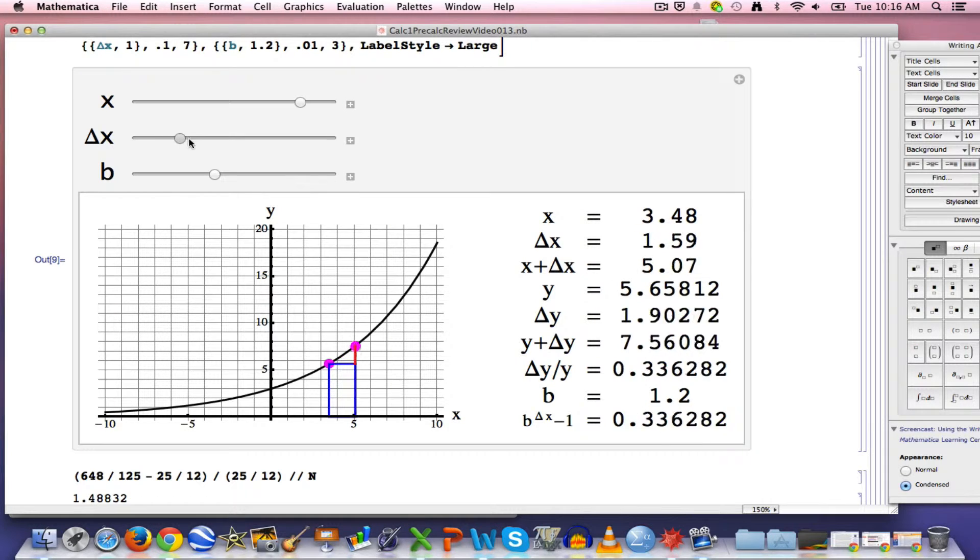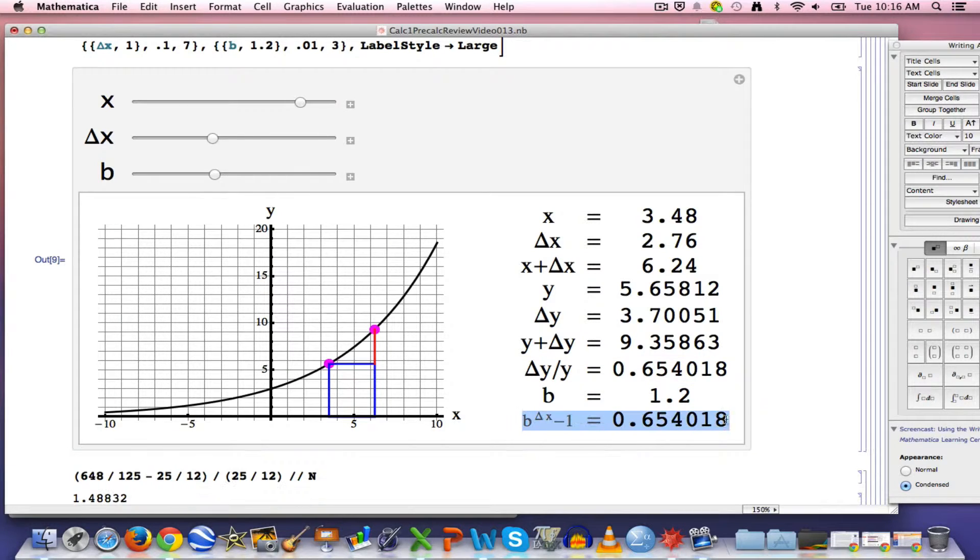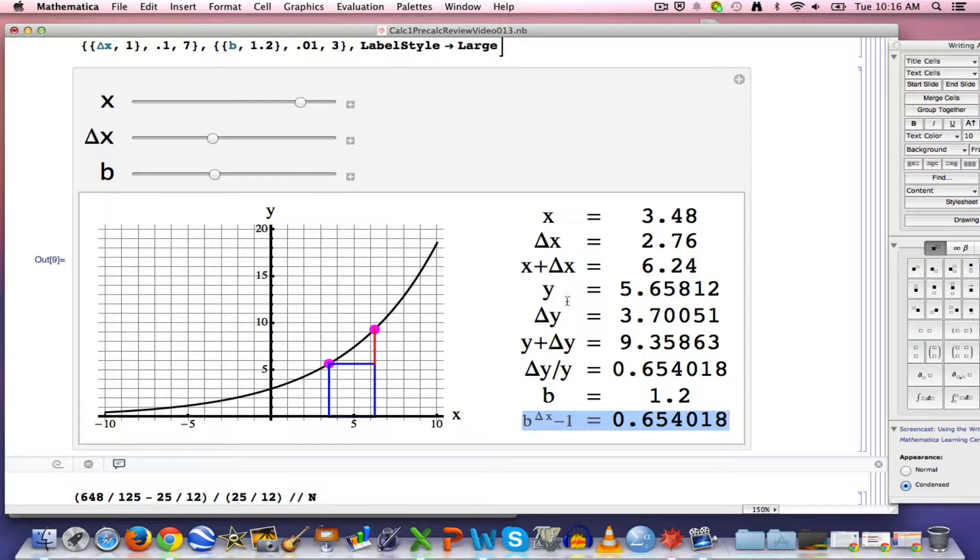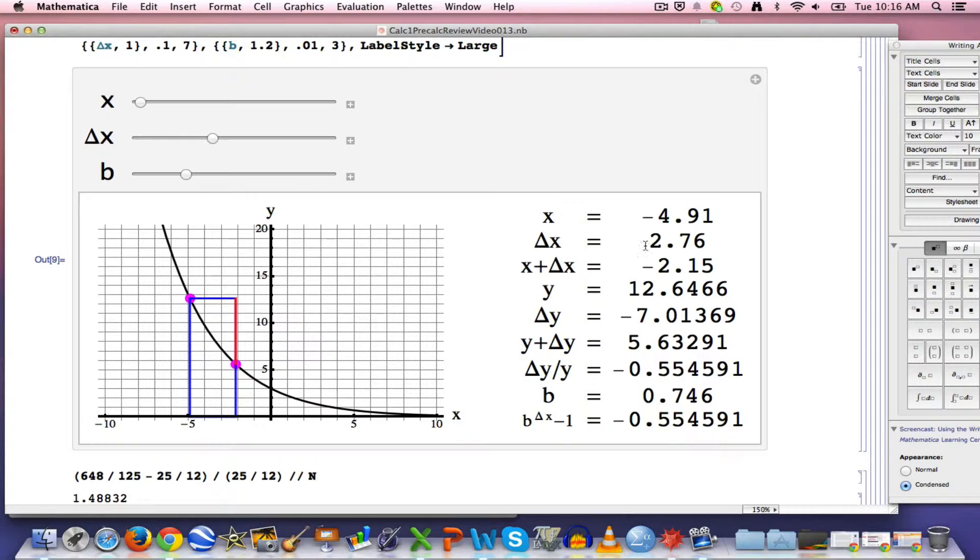If I change delta X, then of course those quantities do change. But they do stay the same. Relative change, delta Y over Y still does equal B to the delta X power minus 1. It even works if B is between 0 and 1, so that I have exponential decay. So here I have exponential decay.